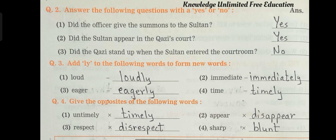Question number 3: Add -LY to the following words to form new words. Number 1 — Loud: Loudly. Number 2 — Immediate: Immediately. Number 3 — Eager: Eagerly. Number 4 — Time: Timely.